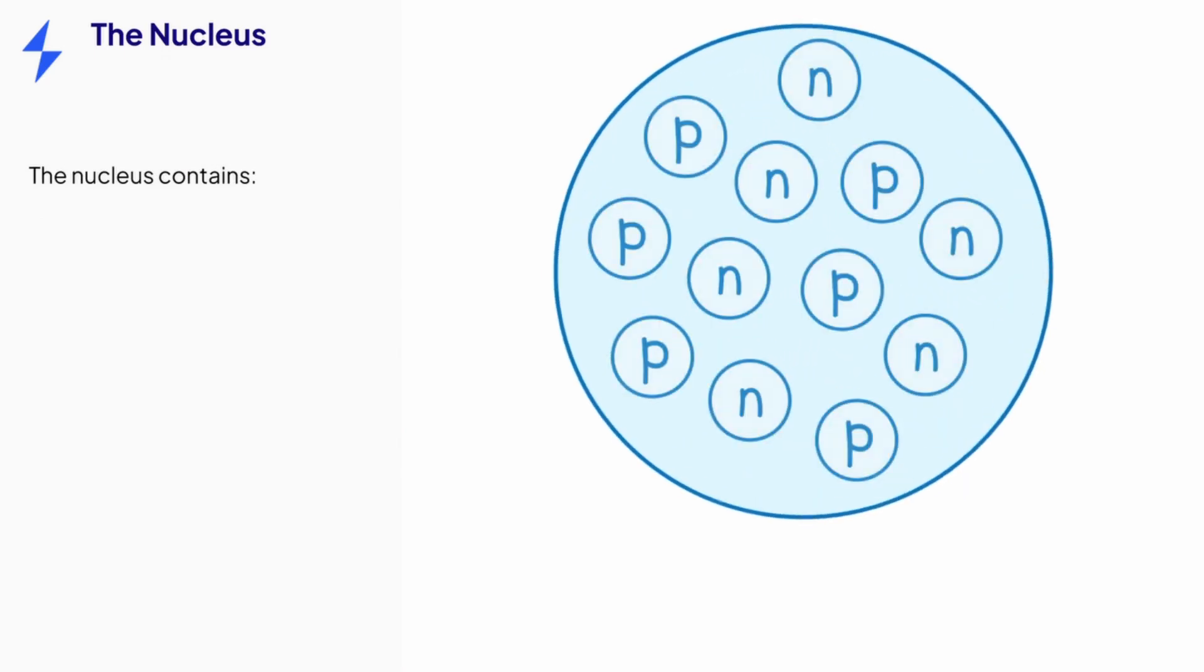Let's take a closer look inside the nucleus now. Inside we have two types of subatomic particle, neutrally charged neutrons and positively charged protons. These positively charged protons give the nucleus its overall positive charge.